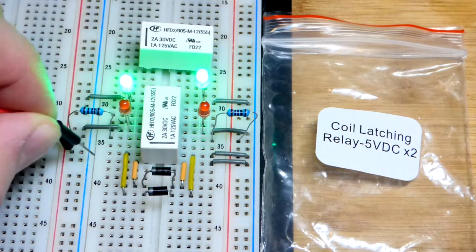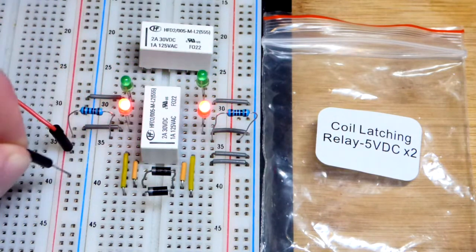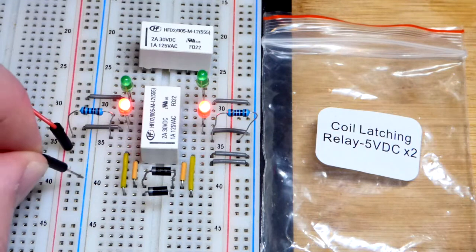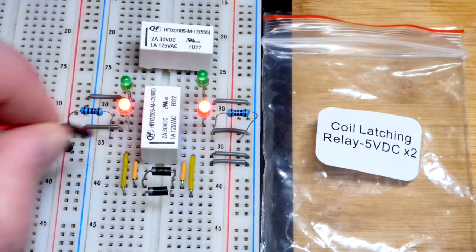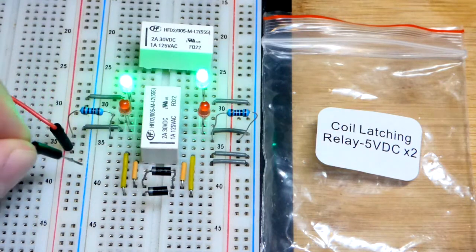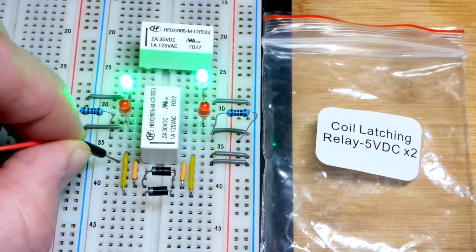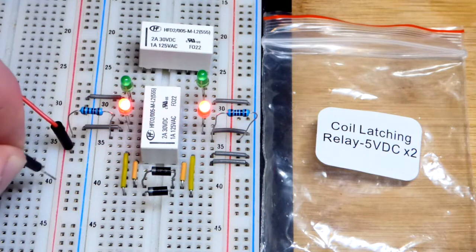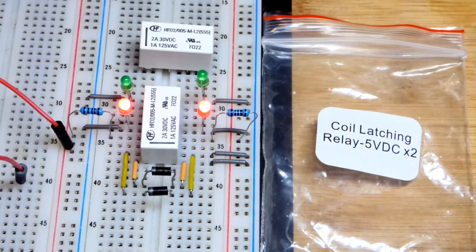So right now the switch is in one position. If I come to that little orange jumper there, now the switch is in the other position. The thing is I'm not powering either coil anymore right now. So I just have to power one coil or the other to get the switch in the position that I want and then it will stay there.